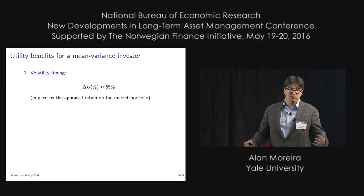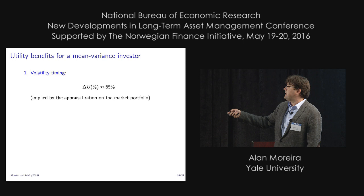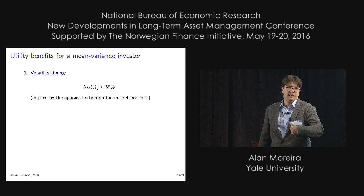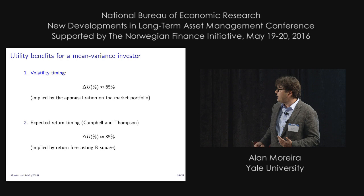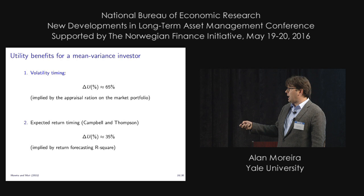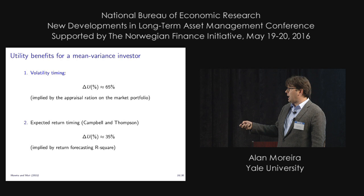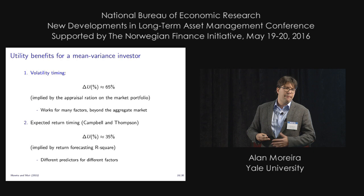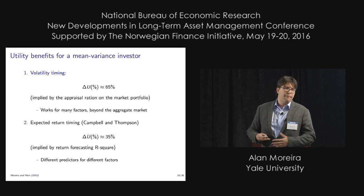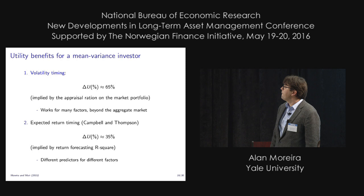Using the appraisal ratio, a mean-variance investor can basically increase his certainty equivalent by 65%. That is, if he has a 10% return he can increase his return to 16.5%. Just to have a sense of magnitudes, expected return timing regressions — which use numbers based on forecasting R-squareds that have all the issues with overfitting — have like a 35% gain. So this is almost twice that. And this works for many factors beyond the aggregate market, while expected return timing requires different predictors for different factors.